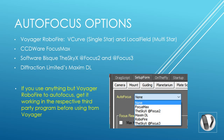Voyager has several different ways it can autofocus. It has two excellent built-in programs: one called v-curve for single star autofocus, and one called local field for multi-star autofocus. You can also use third-party software like CCDware's FocusMax, the SkyX AtFocus 2 and AtFocus 3, and MaximDL's autofocus. If you use any of these third-party packages, make sure you get them working standalone in those programs before trying to use them from Voyager.